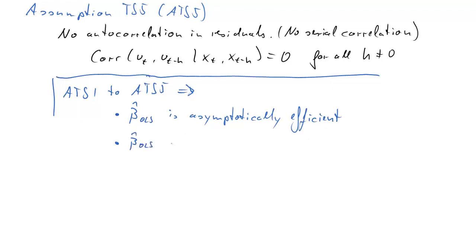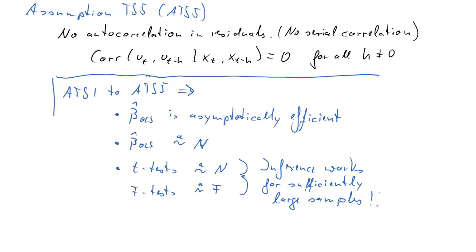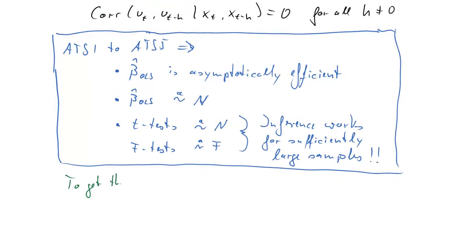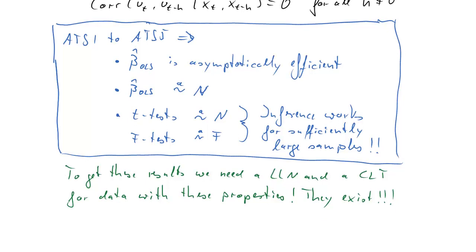We can also establish that beta hat OLS is asymptotically normally distributed. We can establish that T tests are asymptotically normally distributed and F tests are asymptotically F distributed. So these last two points mean that inference works as long as we have a sufficient amount of data. You should note that for all this we need to be able to apply, to establish this, a law of large numbers and central limit theorem. And for data, we need these for data which have the properties which we have allowed here, so in particular the dependence properties. Fortunately, both the law of large numbers and central limit theorem exist. Also note that we did not make any assumption about the error terms having to be normally distributed. That's very important to understand.